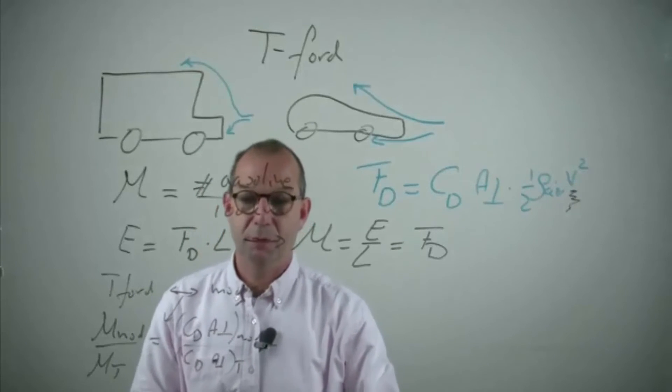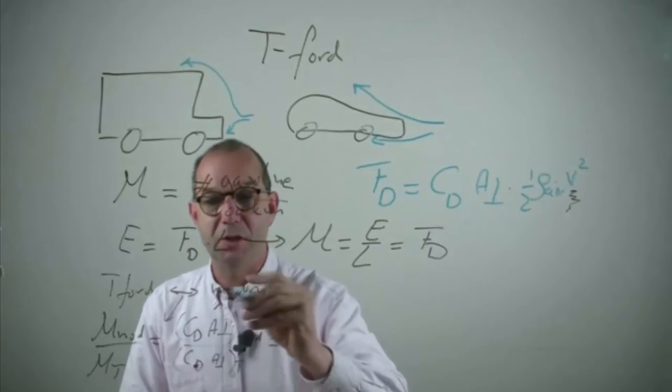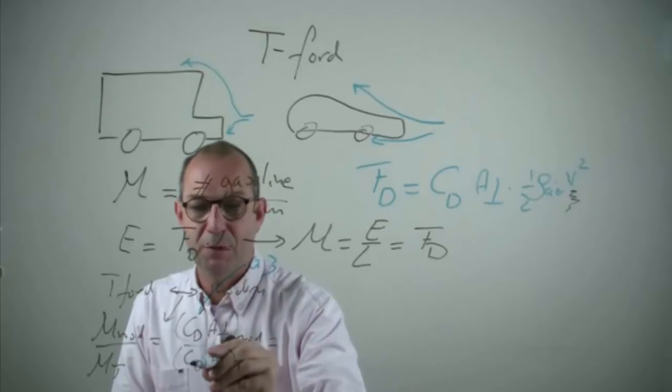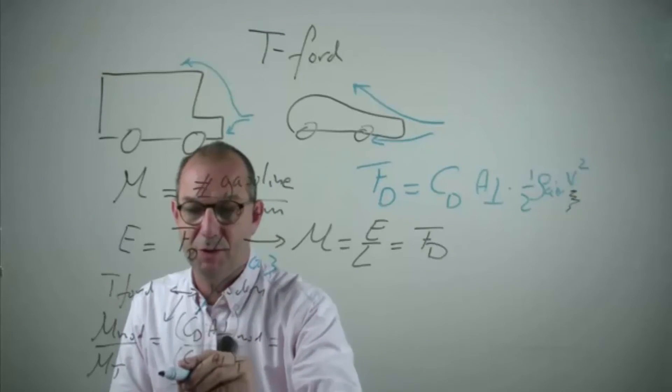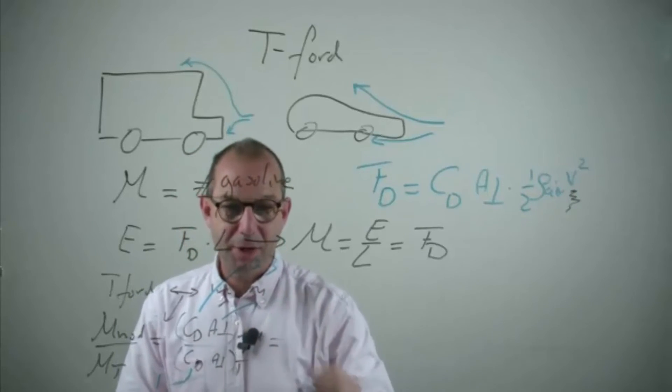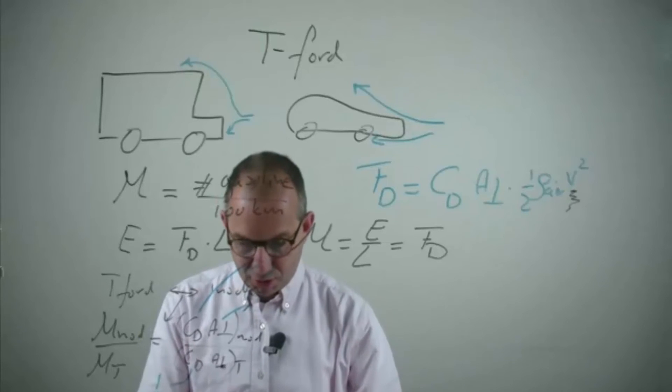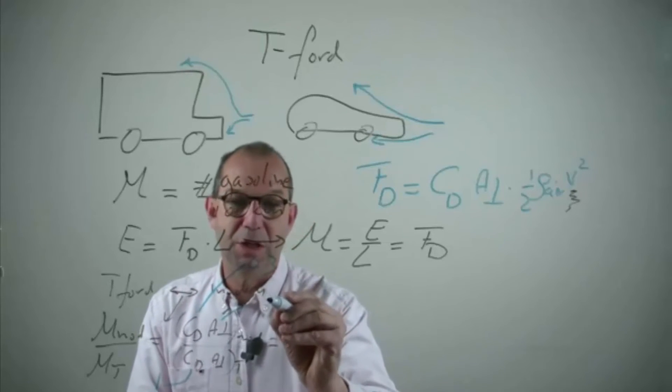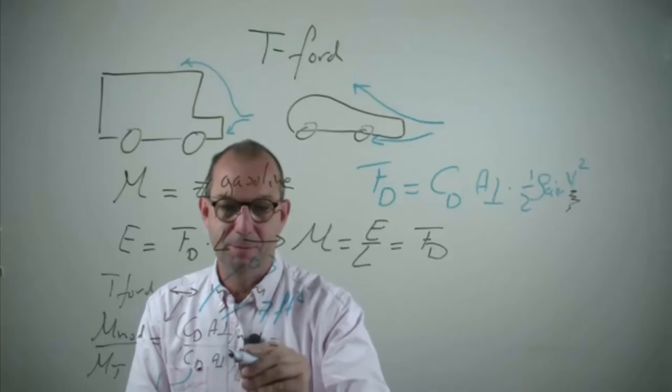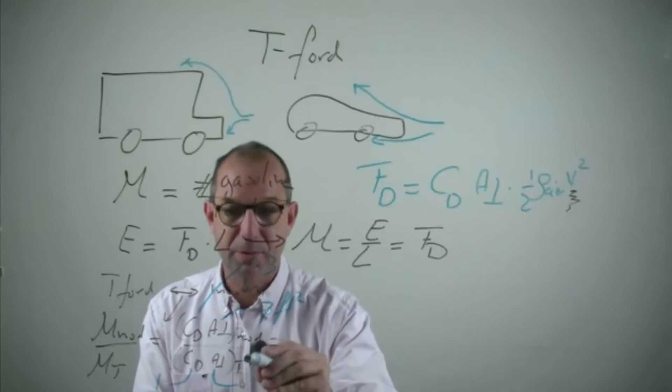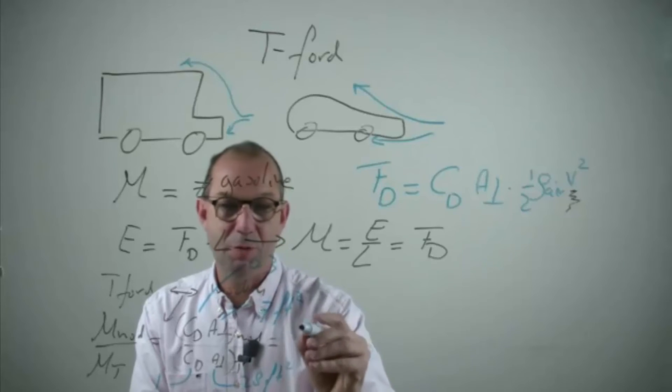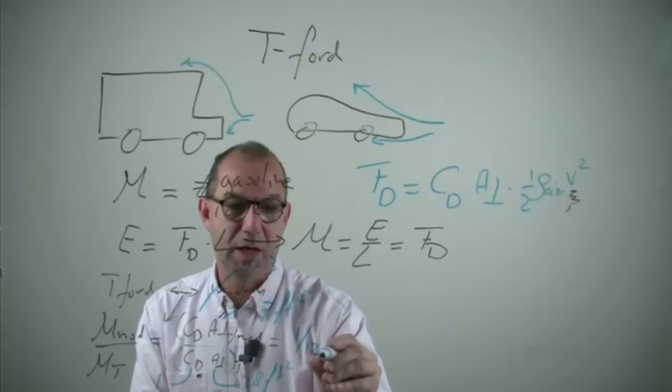We can look these numbers up for instance on the internet. You will find that drag coefficients for modern cars are 0.3 whereas for the T Ford, which is much less streamlined, it's about 1. The frontal area of a modern car is 7 square feet whereas for the T Ford that is 28 square feet. And thus this ratio is 1 over 12.